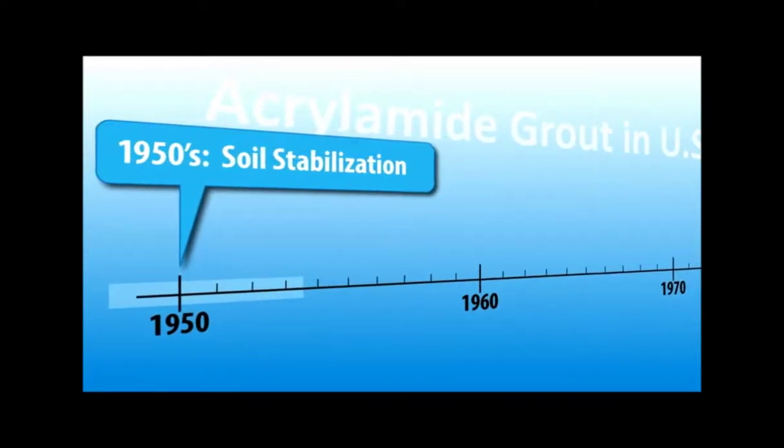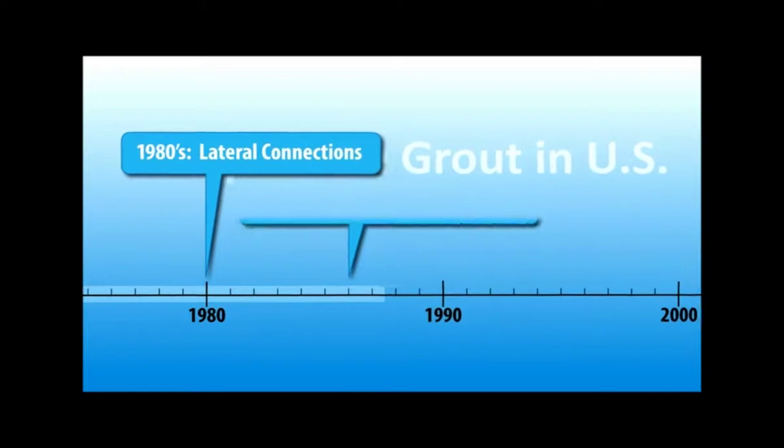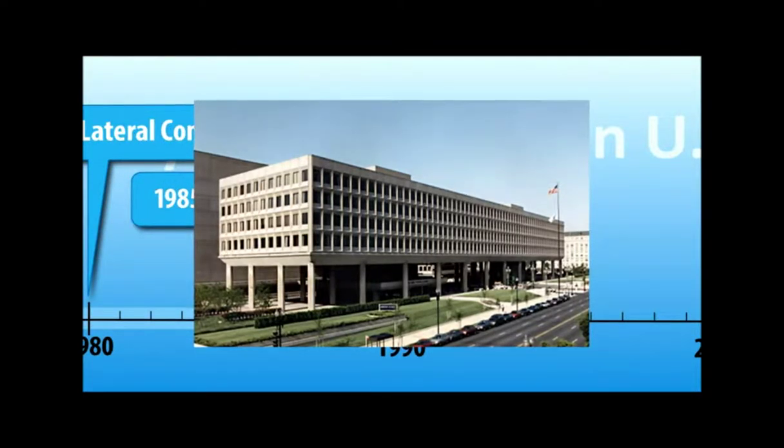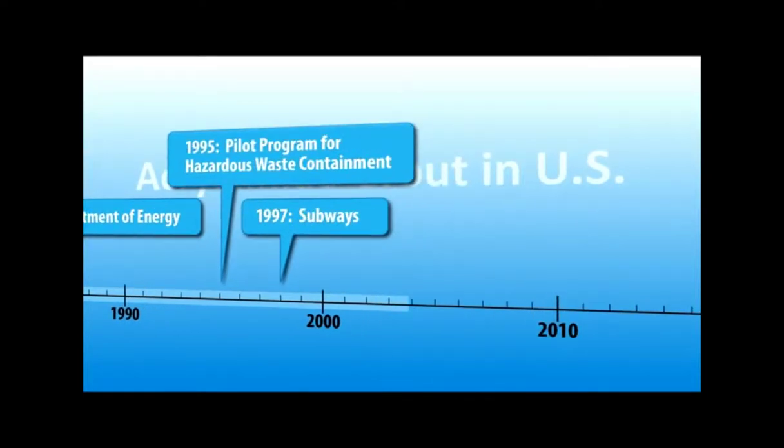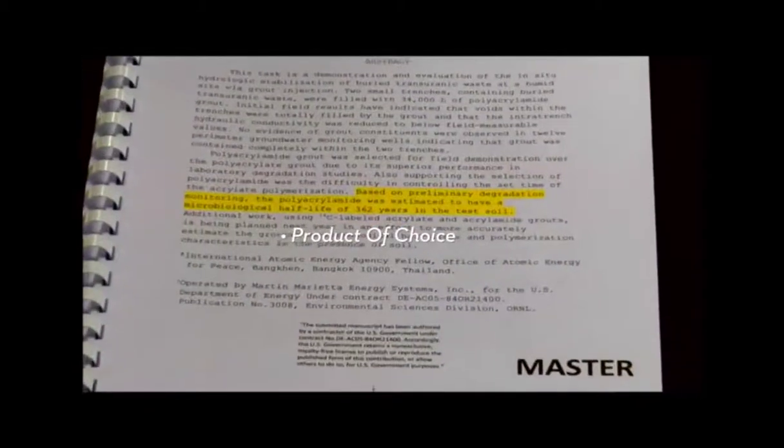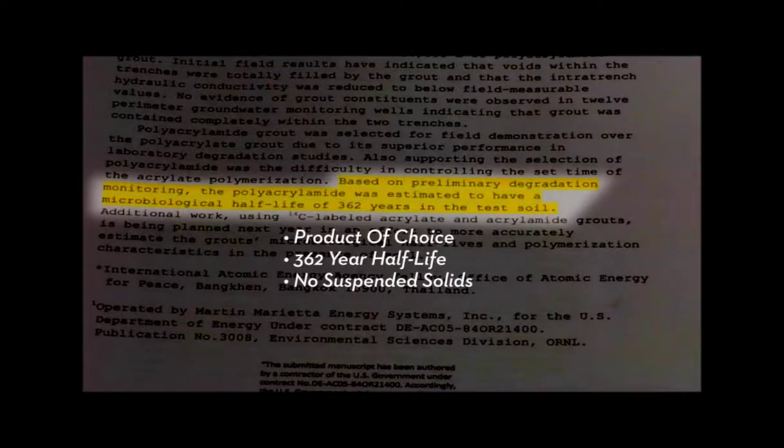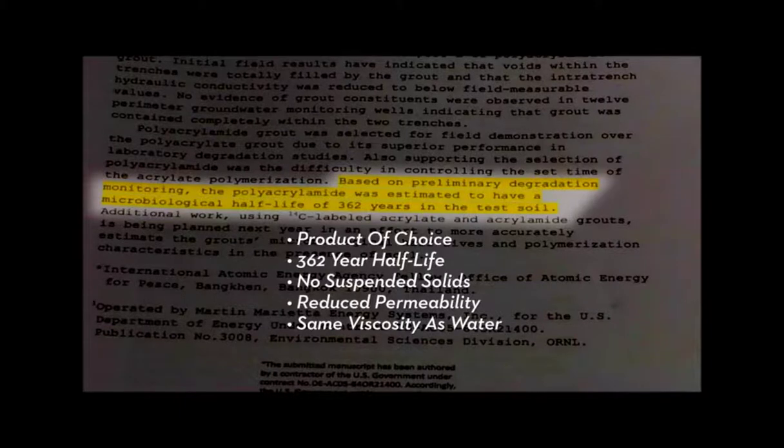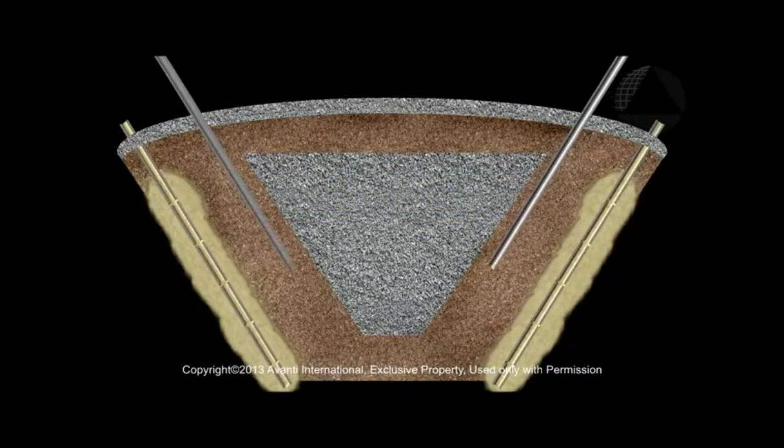Acrylamide chemical grout dates back to the 1950s for soil stabilization. In the 1960s, municipalities began using the same grout to stop water leaks in mainline sewers. In 1985, the U.S. Department of Energy began a program to study and test seven different grout formulations to determine the best product to encapsulate radioactive waste buried after the Manhattan Project in 1951. After 10 years of testing, in 1995, the U.S. DOE concluded AV100 Acrylamide Grout was the product of choice.